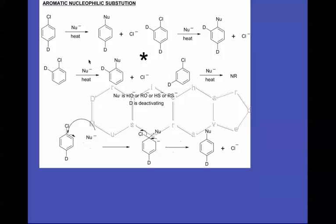First of all, we need some kind of leaving group on the ring, and chlorine is one of the most common leaving groups we can have — this will end up being replaced by the nucleophile. But in order to make the ring more attractive to a nucleophile, which is going to most likely be negatively charged, we're going to have to add deactivating groups. The catch is we have to put the deactivating groups in specific positions on the ring relative to where the chlorine is.